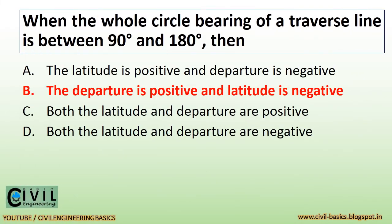When the whole circle bearing of a traverse line is between 90 degrees and 180 degrees, then the departure is positive and the latitude is negative.